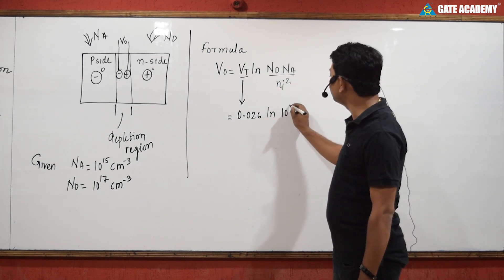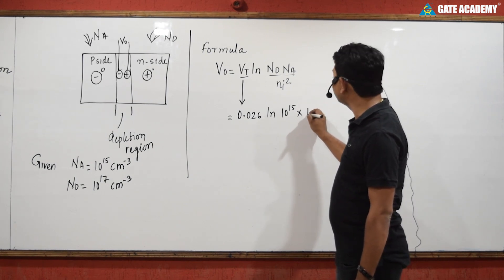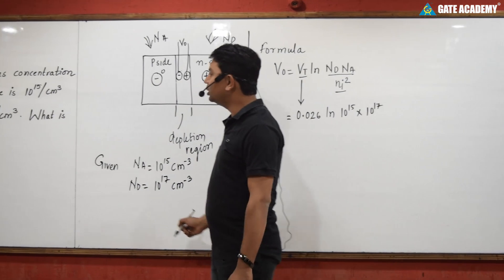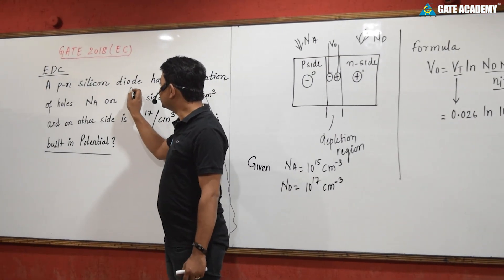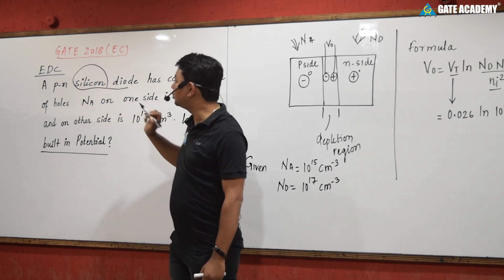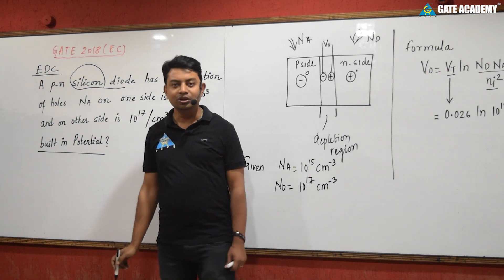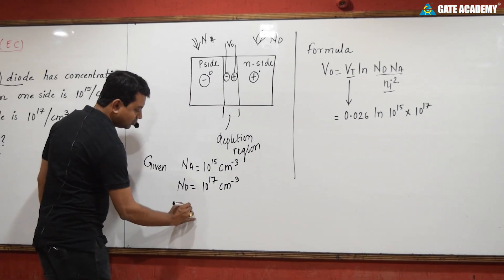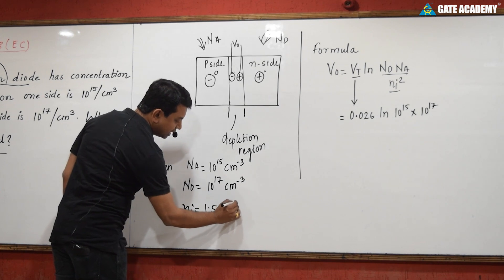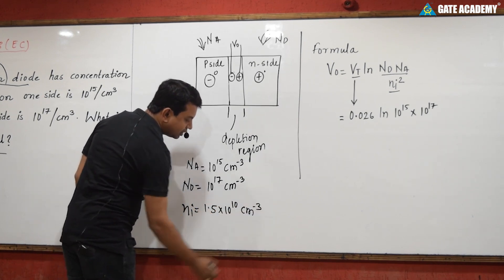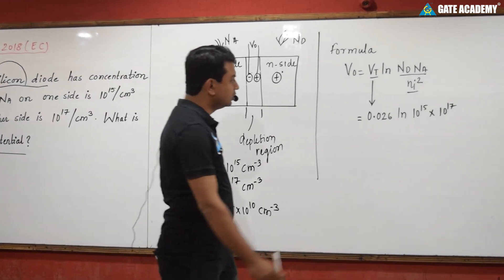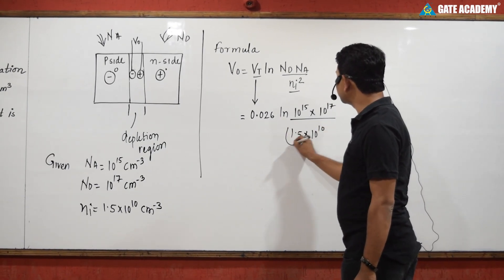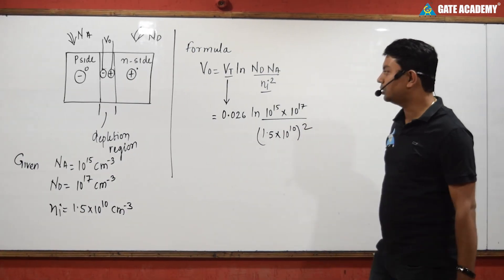ND is given as 10 to the power 15, and NA is given as 10 to the power 17. For the NI² term, we first identify the semiconductor used. Since this is a silicon diode, NI for silicon is 1.5 × 10 to the power 10 per centimeter cube at 300 K (room temperature). We use the square of this value in the formula.